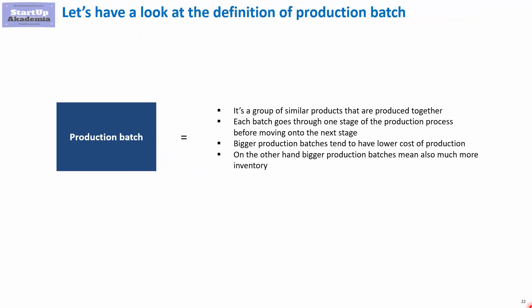Another term you may come across is the production batch. By production batch, we simply mean a group of similar products that we produce together to save some money. Usually a production batch goes through the stages of the production process together, and you have to put all the products through a specific stage before moving to the next stage. Generally, bigger production batches mean lower cost per unit, but they also mean more inventory — so you always have this trade-off between costs and inventory.